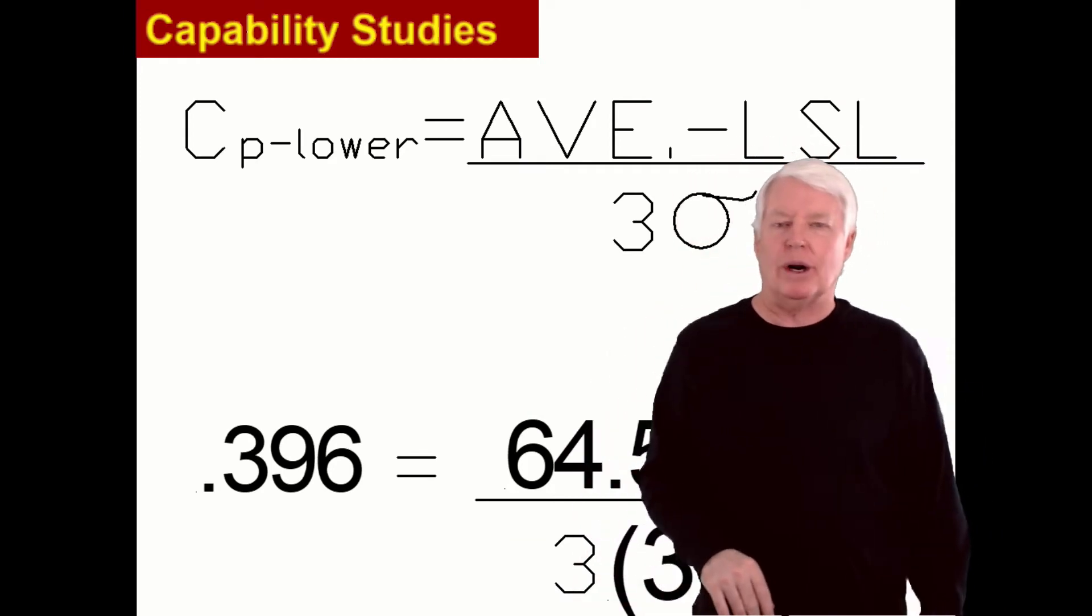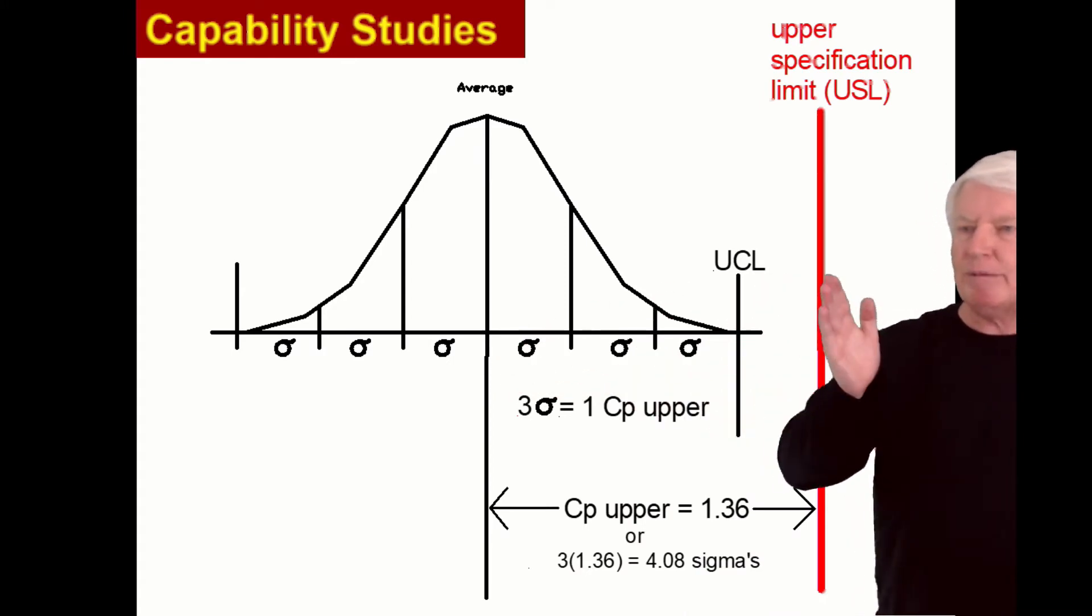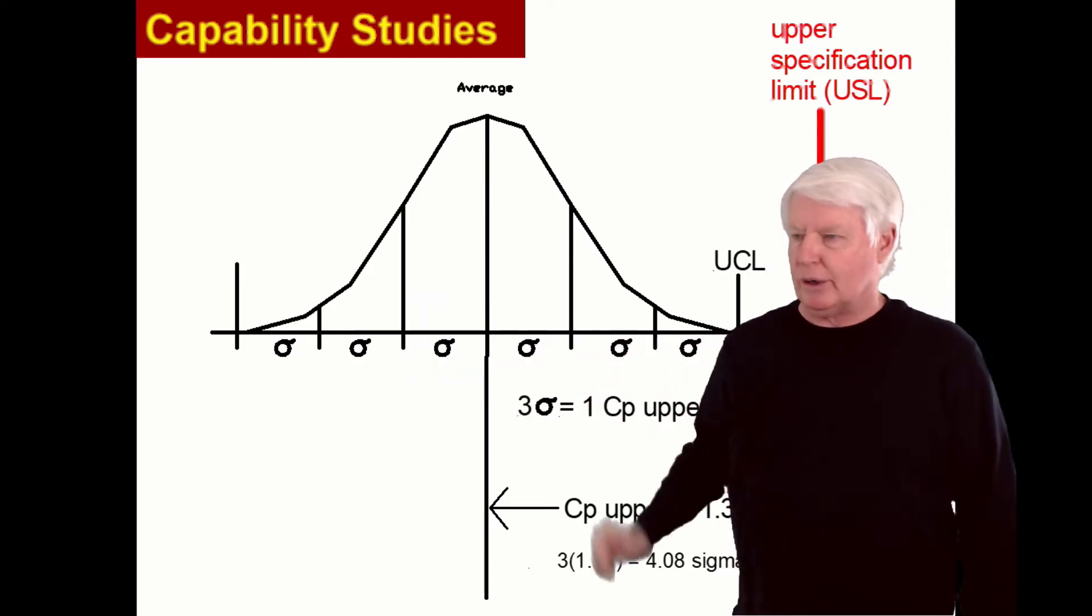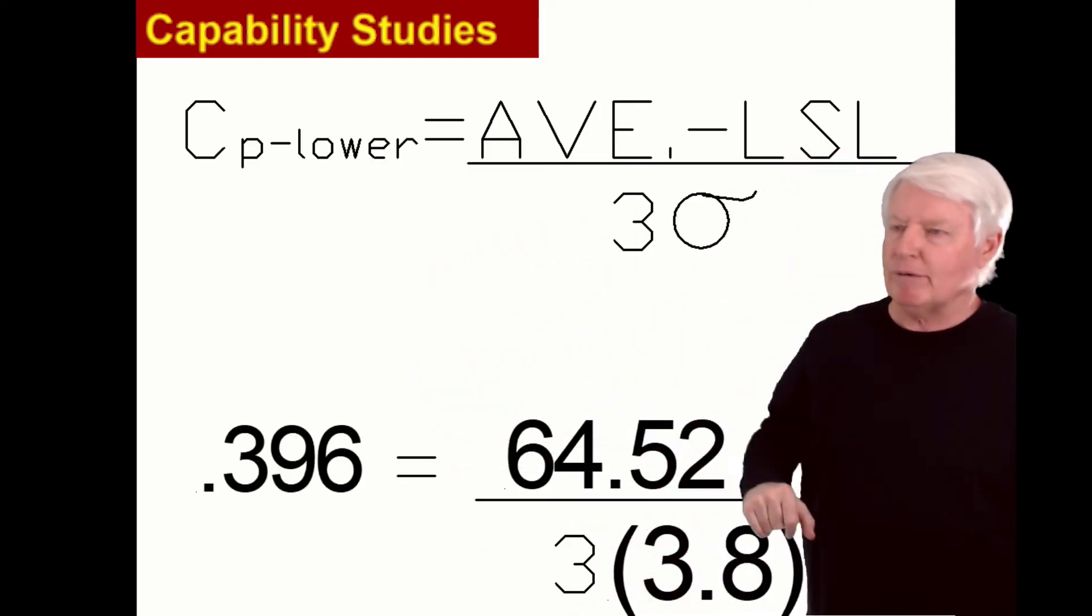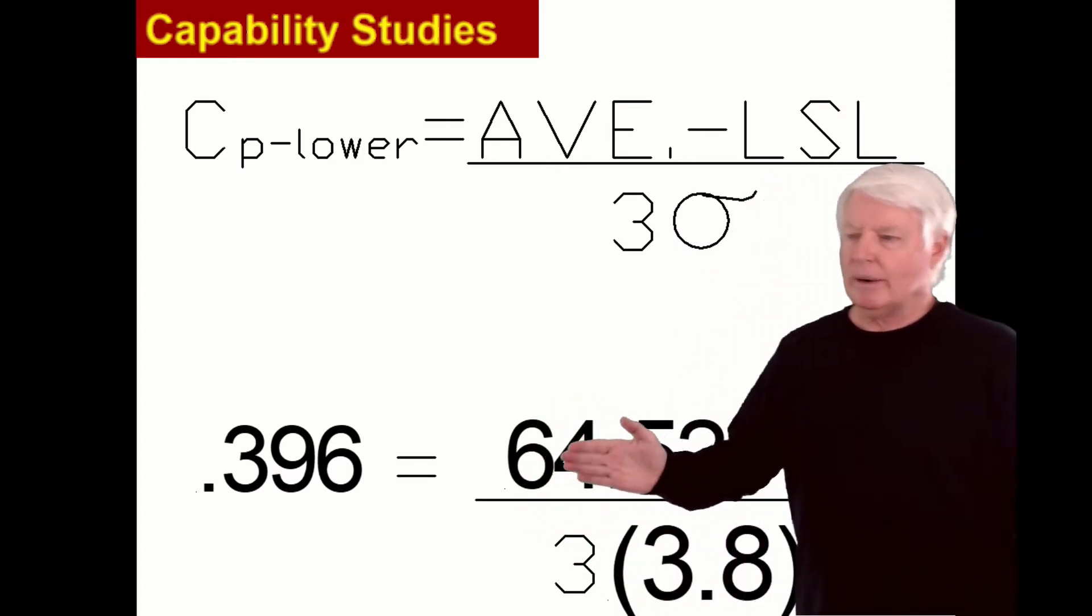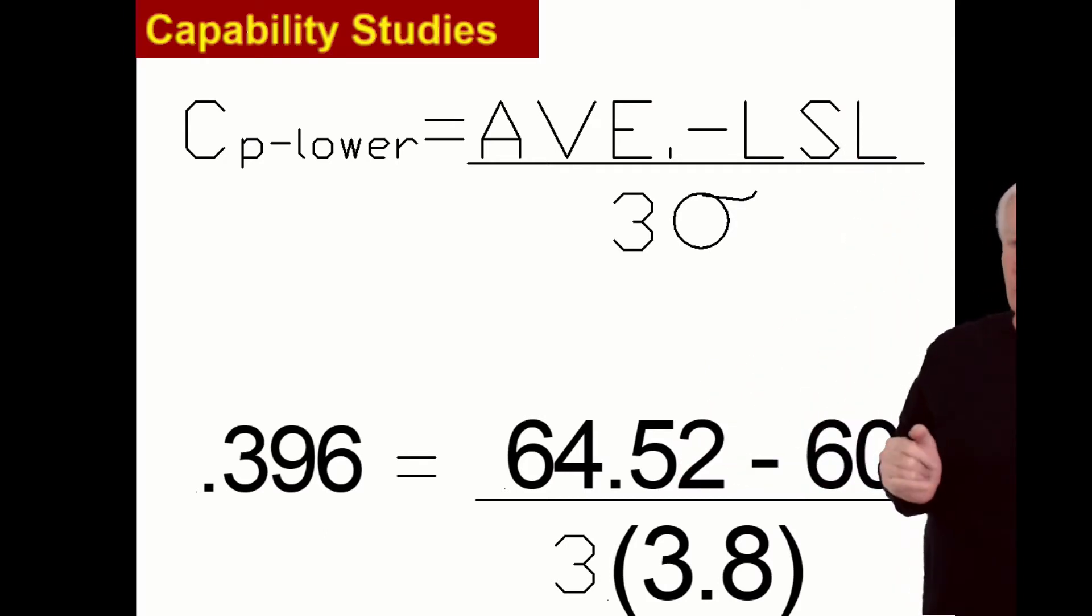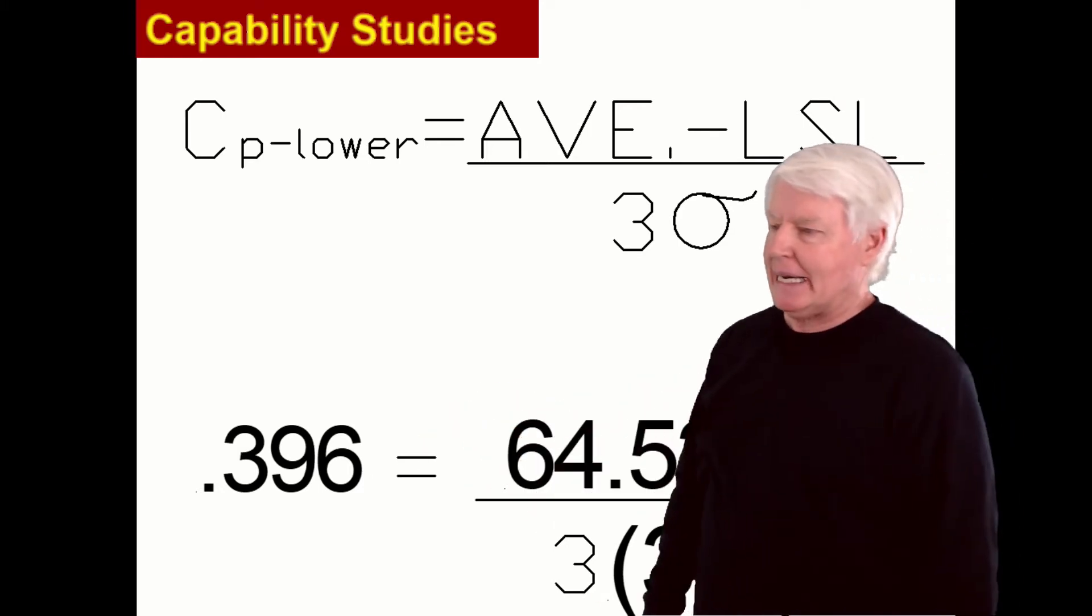Okay, now let's do CP lower. Remember, it's the same type of thing. CP upper was from the average to the upper spec limit. CP lower is going to be the distance from the average to the lower spec limit. There's the formula: average minus lower spec limit divided by three sigma. And we already know the average was 64.52, the lower spec limit was 60, sigma was 3.8. Plug it in, you get 0.396.